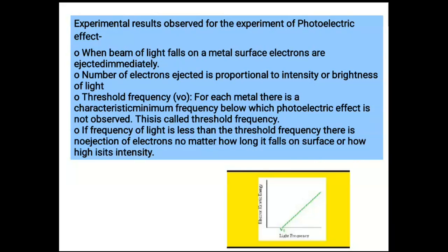The experimental results of the photoelectric effect are: number one, when a beam of light falls on a metal surface, electrons are ejected immediately. Number two, the number of electrons ejected is proportional to the intensity or brightness of the light. Number three, threshold frequency — for each metal there is a characteristic minimum frequency below which the effect is not observed. If the frequency of light is less than the threshold frequency, no ejection of electrons takes place, no matter how long it falls on the surface or how high its intensity.